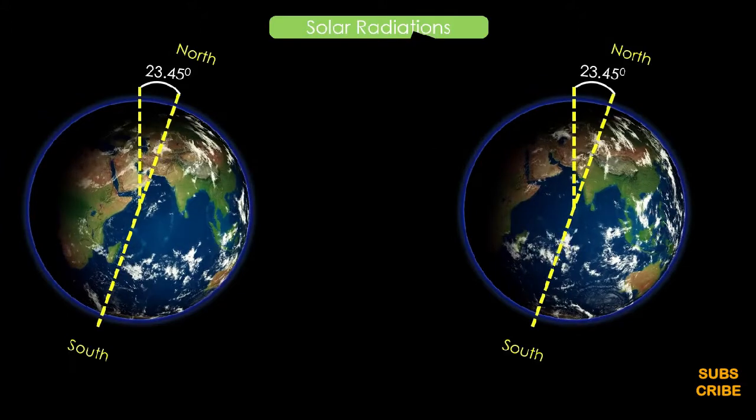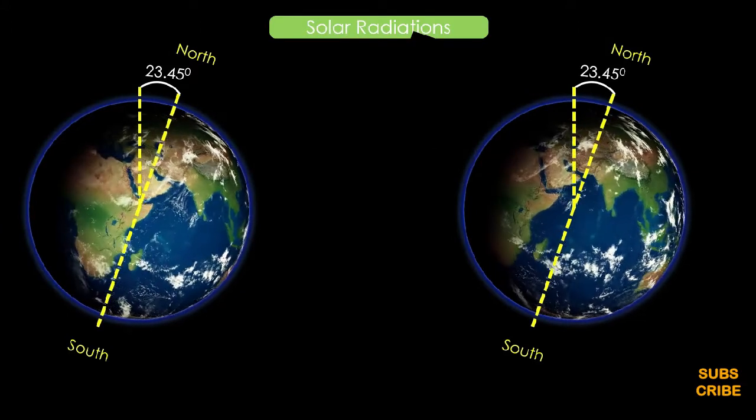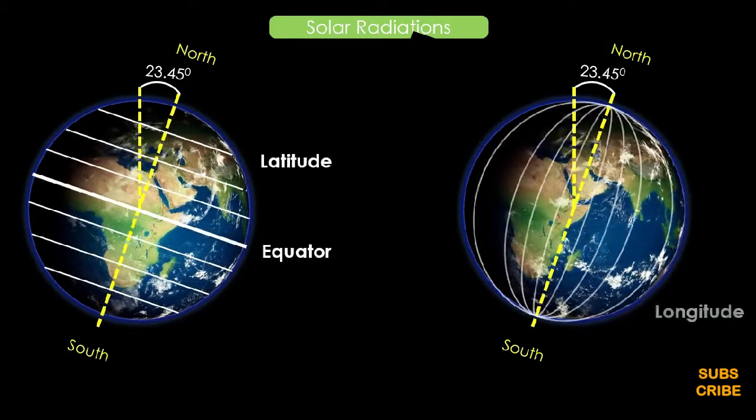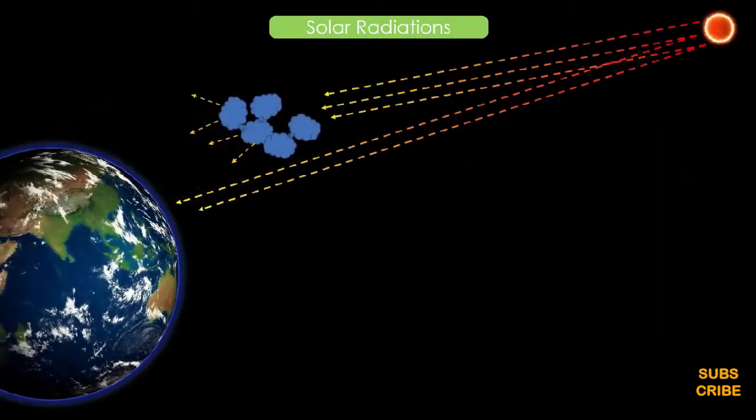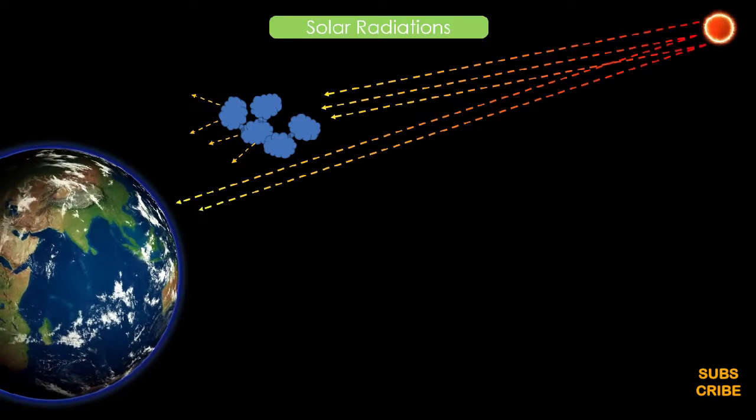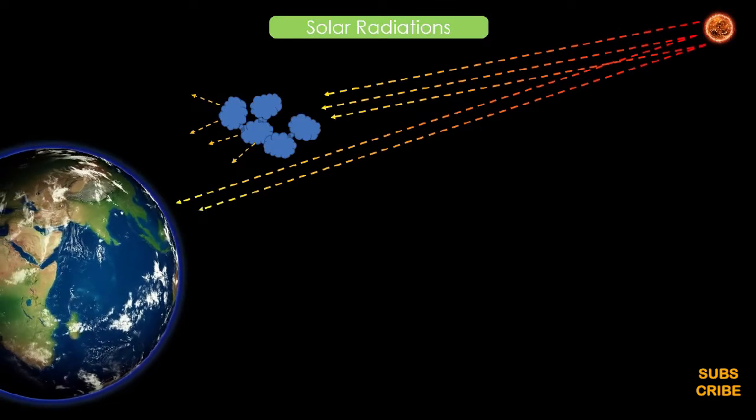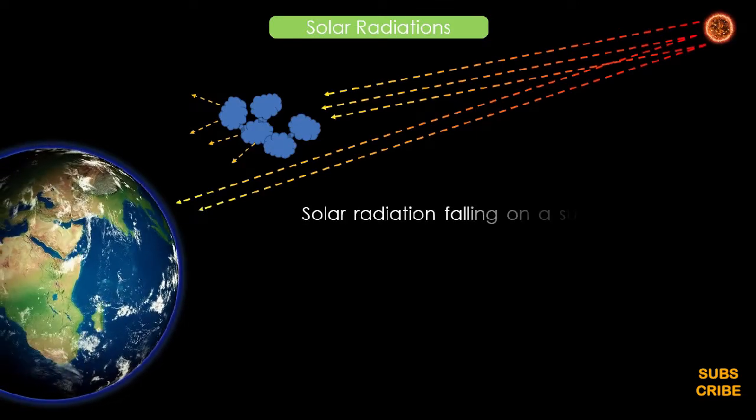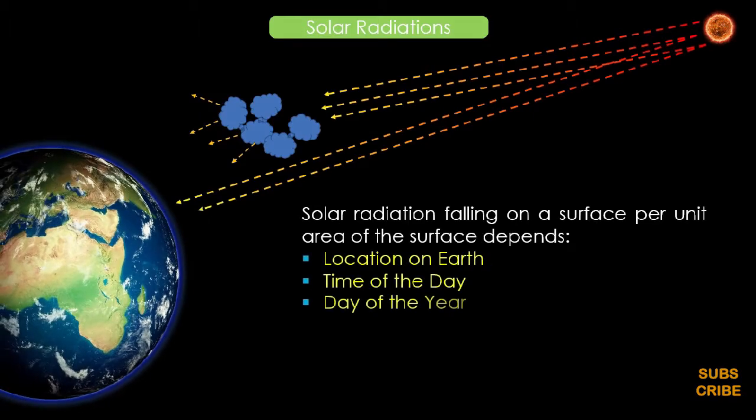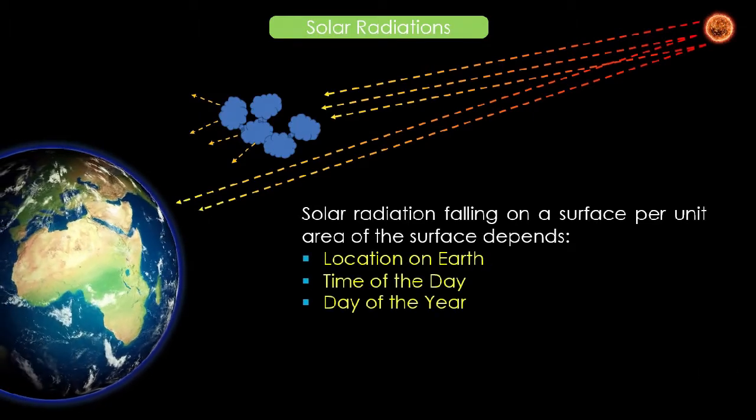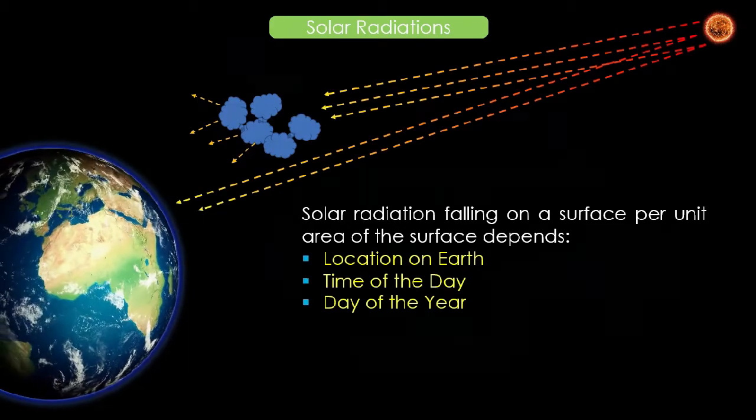Further, to find out any location on the earth, the earth is marked with latitudes and longitudes. Consequently, in consideration of various motions of the earth, the solar radiation falling on the surface per unit area would depend on the location on the earth, the time of the day, and the day of the year.